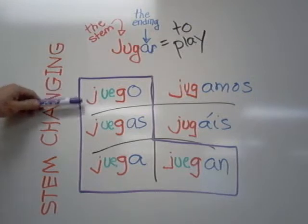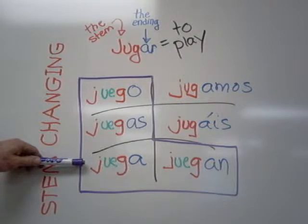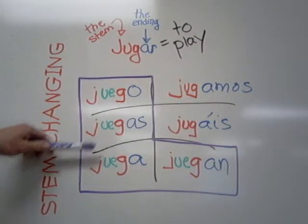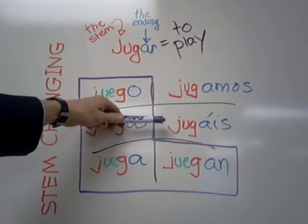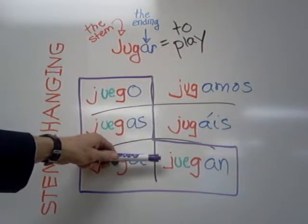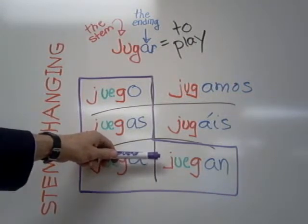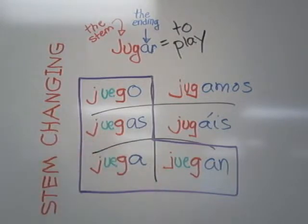So we have: yo juego, tú juegas, usted juega, él juega, ella juega, nosotros jugamos, vosotros jugáis, ustedes juegan, ellos juegan, ellas juegan. That's a lot of playing.